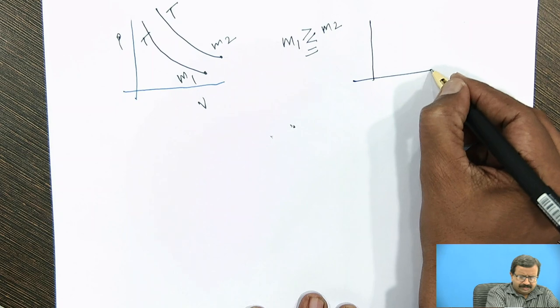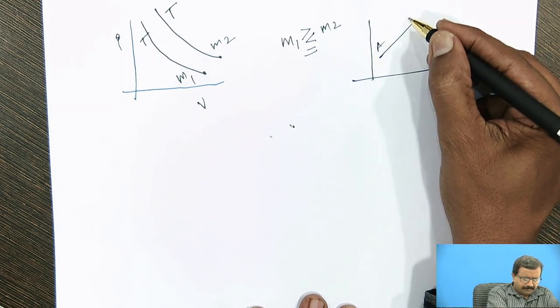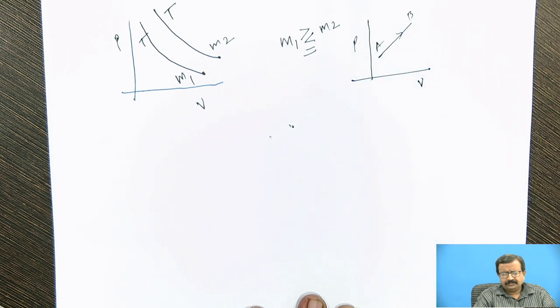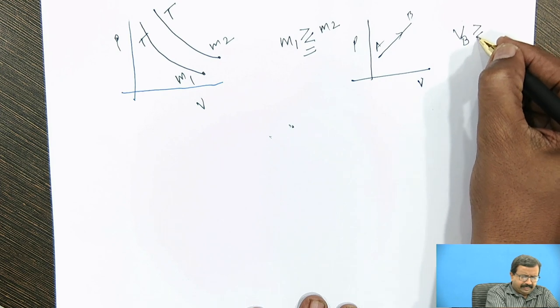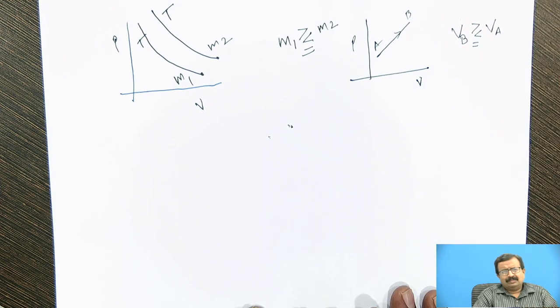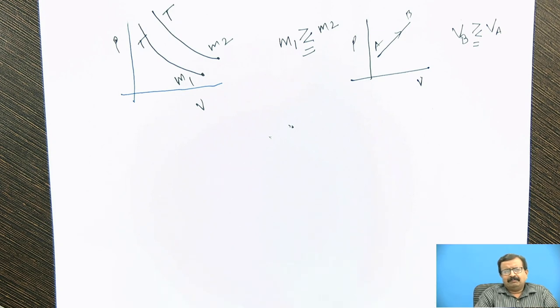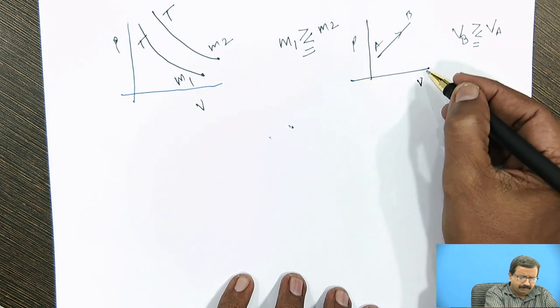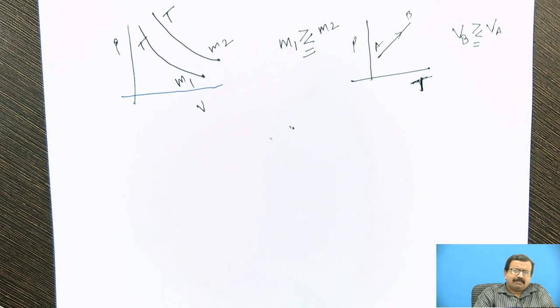Second conceptual question: this is process A to B. If I show it on the PV diagram A to B—I am asking you whether VB is greater than, less than, or equal to VA. Now this appears to be very simple, but if you look at the nature of the process shown A to B, you will find that A to B is not passing through a PV diagram, it is a PT diagram. When it is not passing through origin, it is not a constant volume process. So you have to use the equation for a line y equals mx plus c. You have to find out the constant of integration by the given boundary conditions and then evaluate.